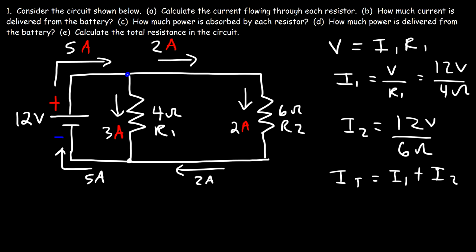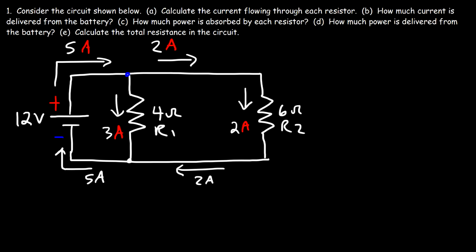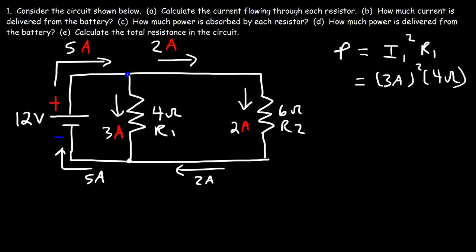Now let's move on to part C: how much power is absorbed by each resistor? Starting with resistor 1, to calculate the power we use I1 squared times R1. There's a current of 3 amps flowing through that resistor and the resistance is 4 ohms. So 3 squared is 9, times 4 is 36. So 36 watts of power is consumed by R1.